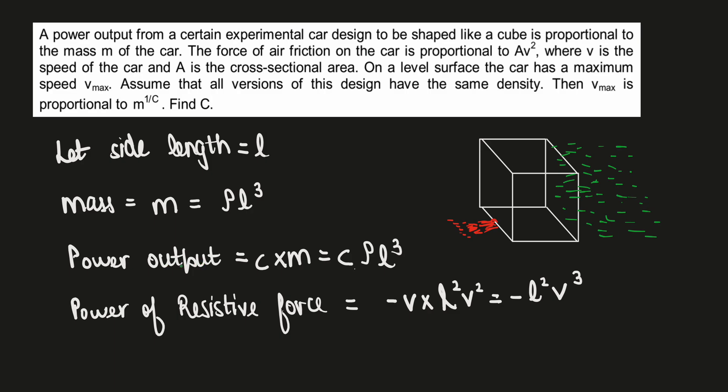So the power output of the engine, I am assuming the power output from the car means power output from the engine, is directly proportional to mass. So it would be some constant c into the mass, and mass I can write as ρl³.